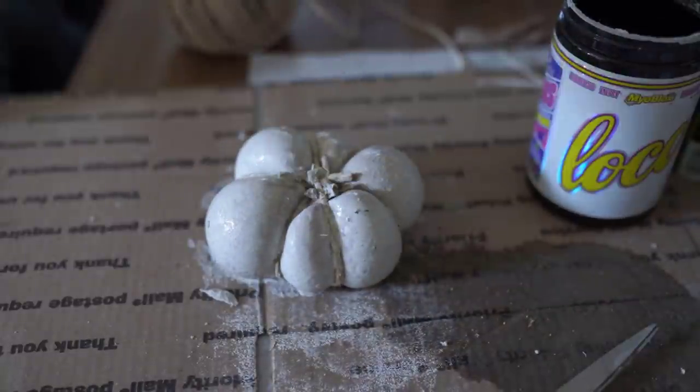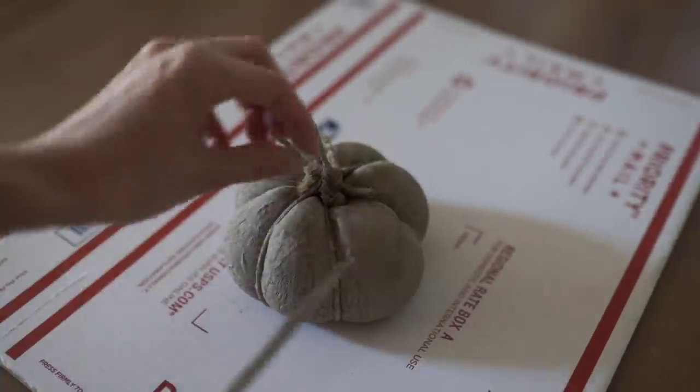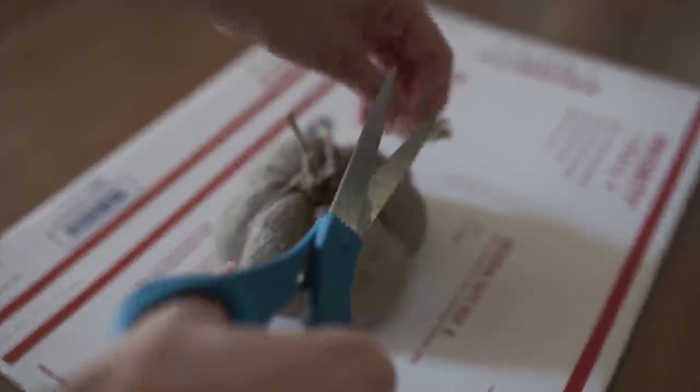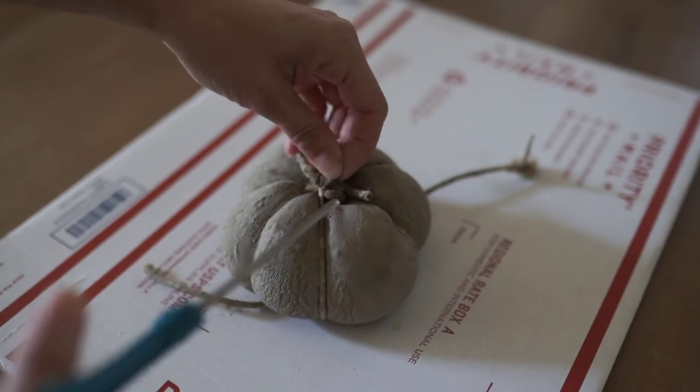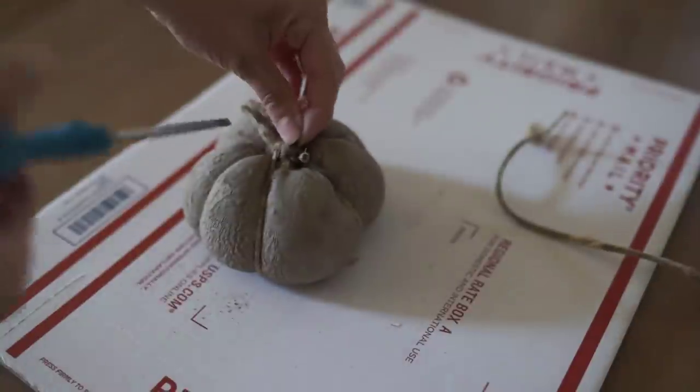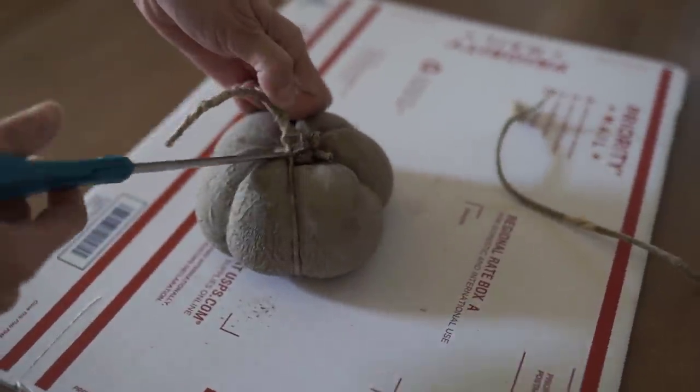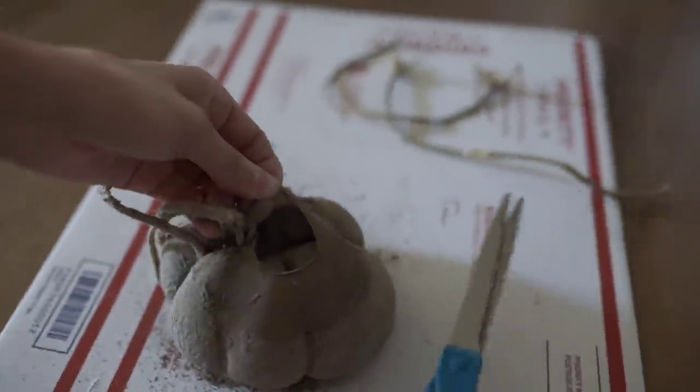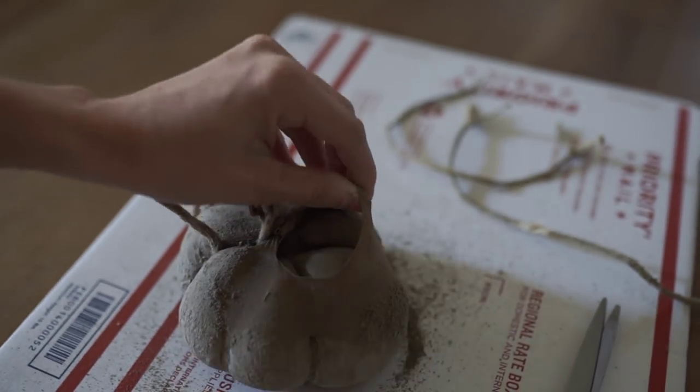So my favorite part is obviously unveiling these to see how they turned out. I just took a pair of scissors and cut all of the strings off. Some of them do get a little bit wedged in there so you kind of have to tug at them to get them out. Most of them came out pretty easy though and then kind of breaking open that pantyhose right there and getting all of that off.